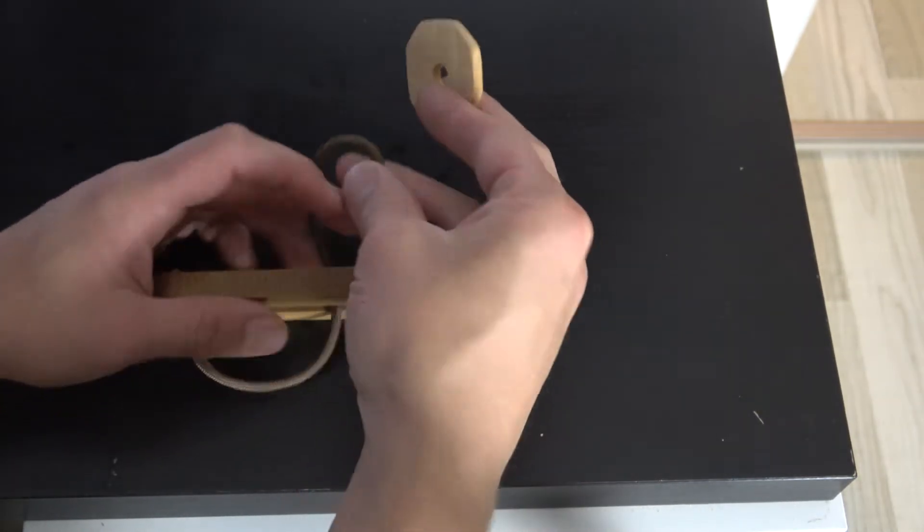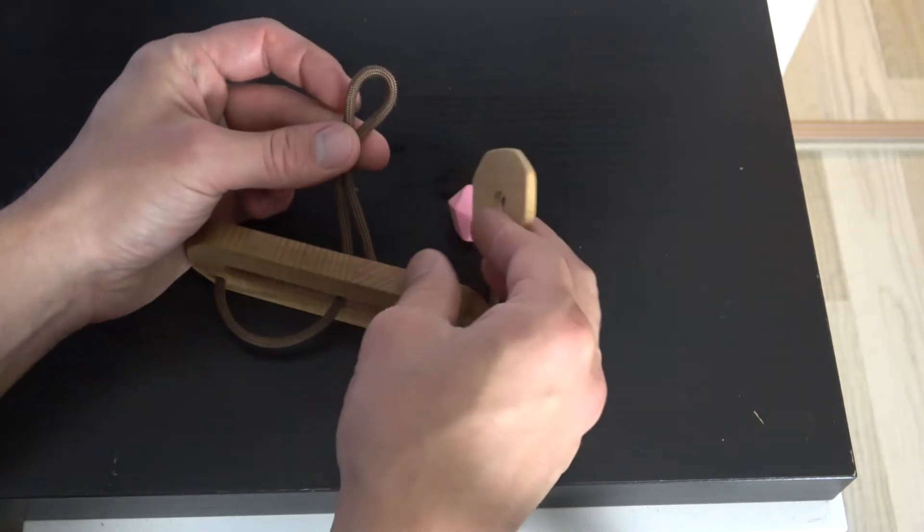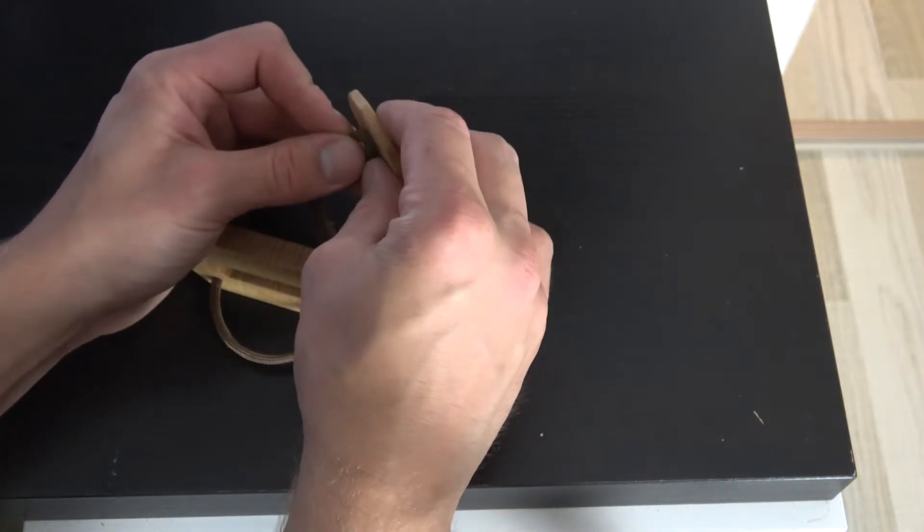Now you are going to take your ring and you are going to grab these two strings connected together and pull it through here.